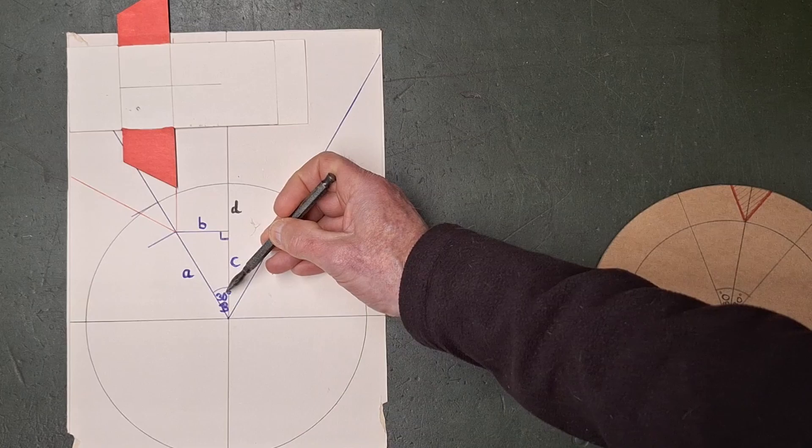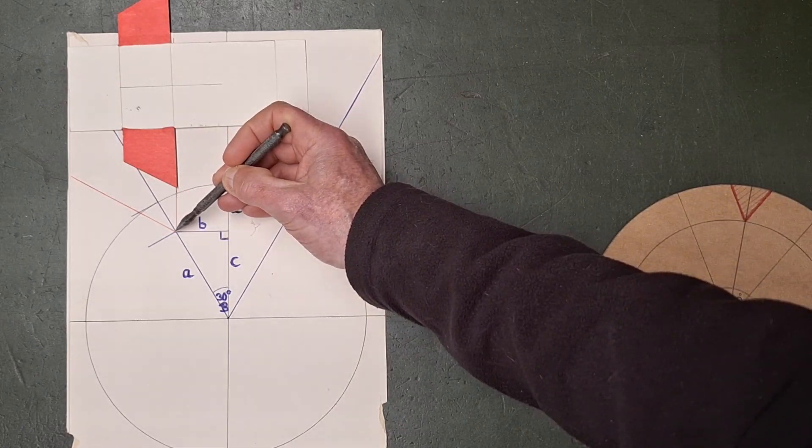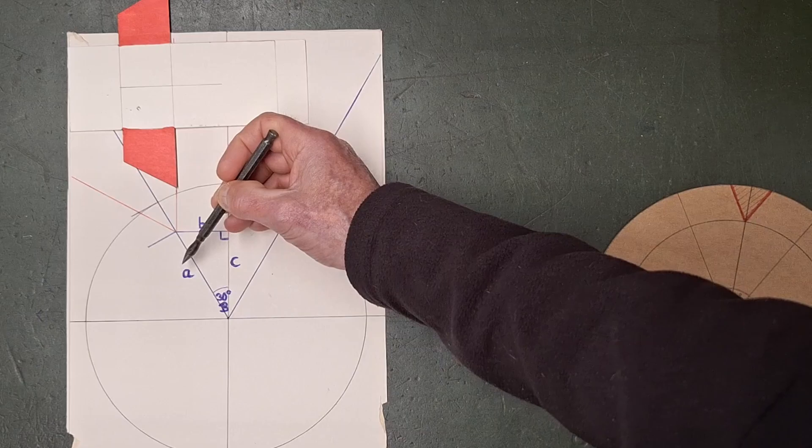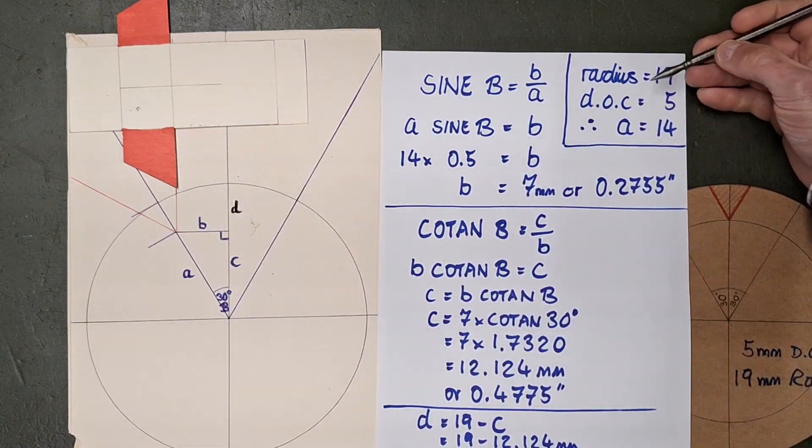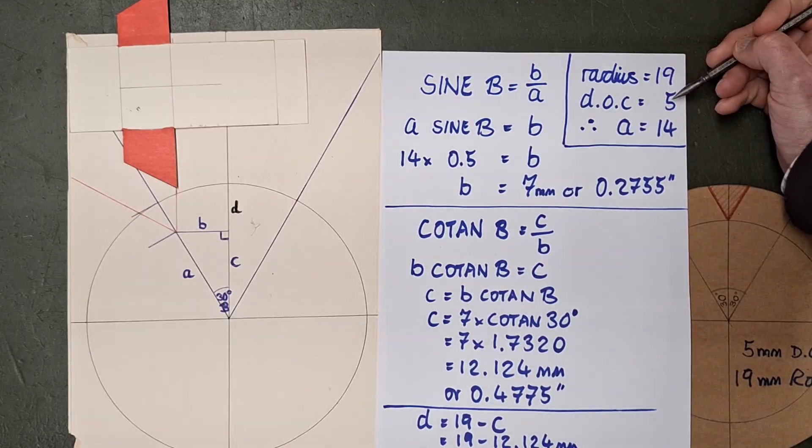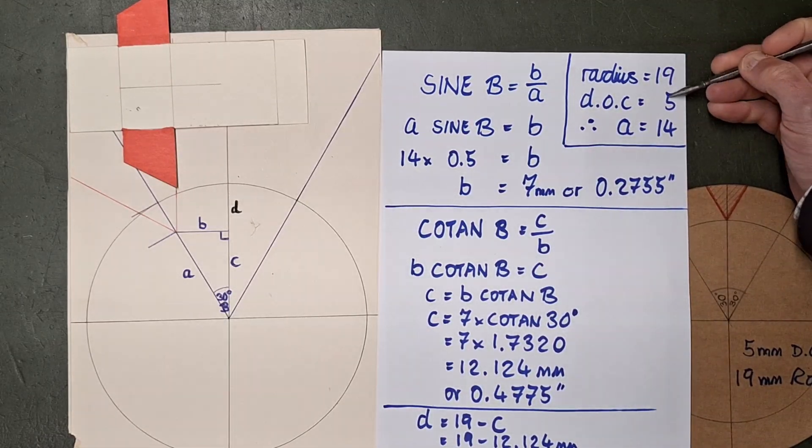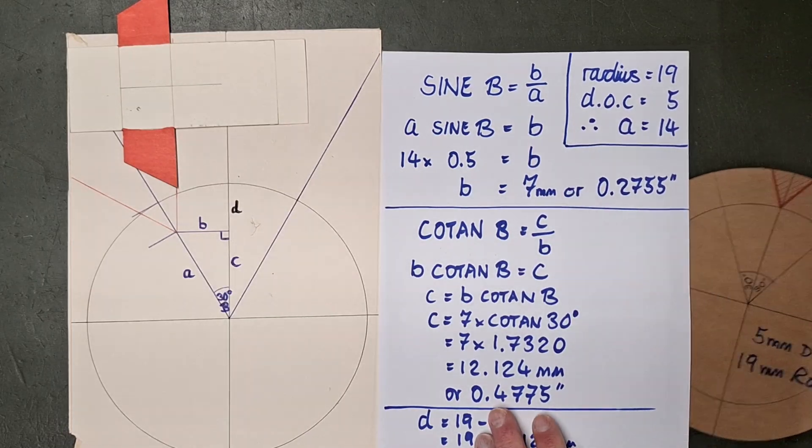So we want to know what B is. We know that angle of 30 degrees, and because we're going for that to be 5 millimeters, we know that A is 14, because we've got a radius of 19. I've said I want a depth of cut of 5. 5 from 19, 14. So already we're in fairly straightforward territory.